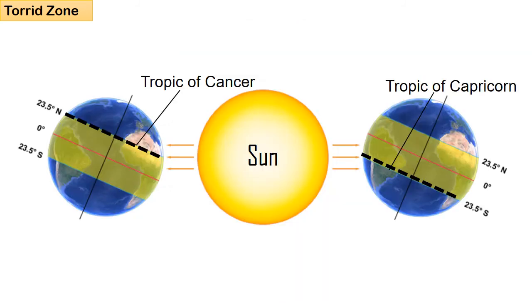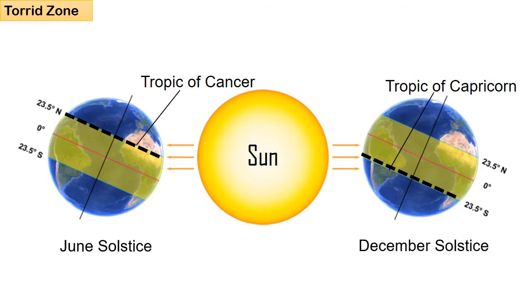This zone receives the maximum amount of heat throughout the year because the rays of the Sun fall vertically on areas lying between the Tropic of Cancer and the Tropic of Capricorn. When the Sun is at the Tropic of Cancer it is known as the June solstice, and when the Sun is at the Tropic of Capricorn it is known as the December solstice. All regions within these latitudes have the Sun right overhead at some point in the year.